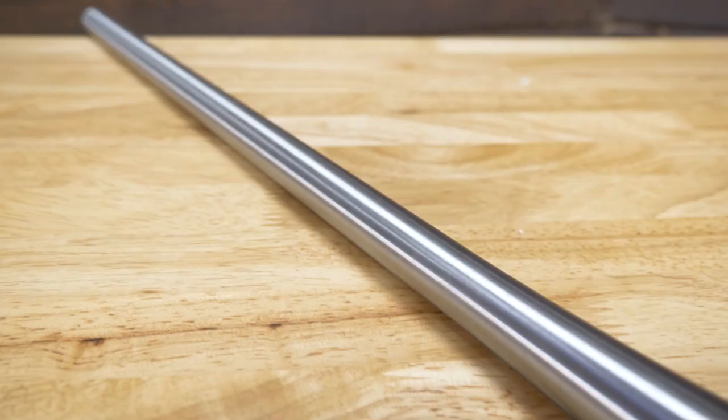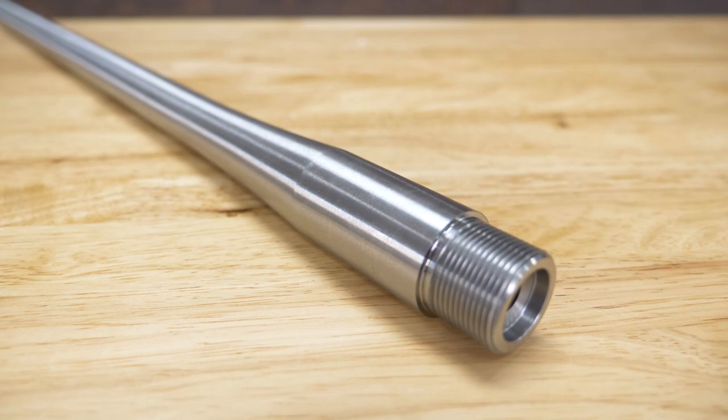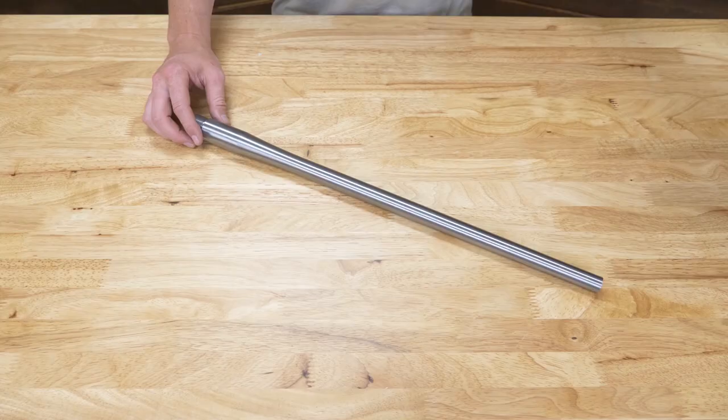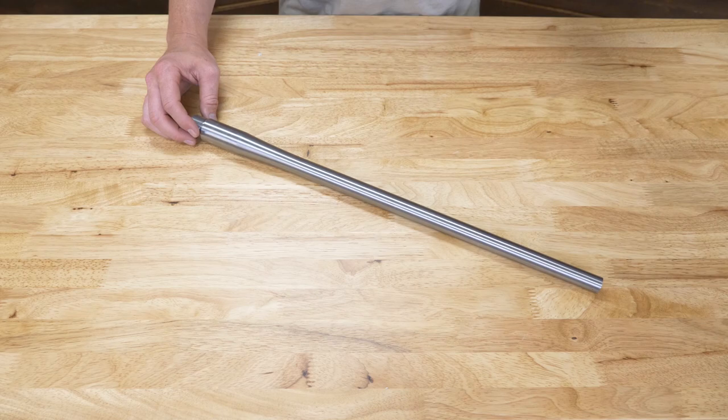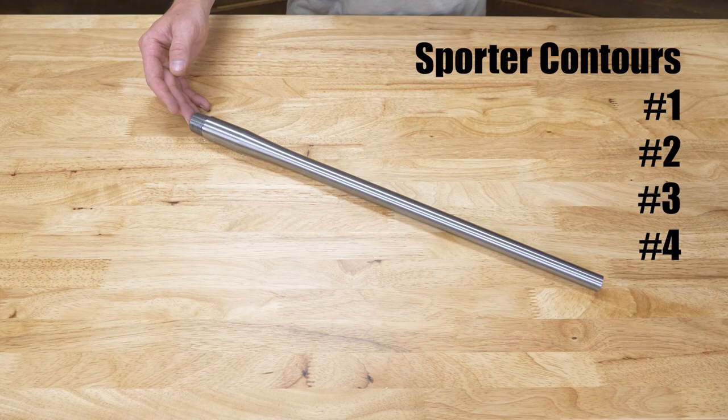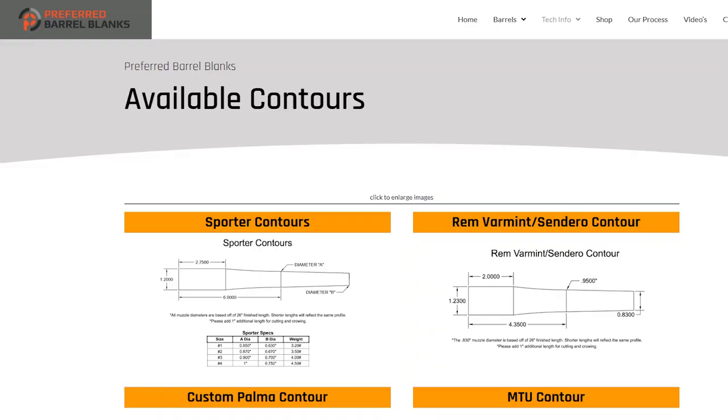Sporter contours have a radius that starts from 2 ¾ from the breech and creates a smooth transition to each taper diameter. Sporters vary greatly in weight, and I need to note that the numbers do not reference the barrel weight. Options include the number 1, the number 2, 3, and 4 sporter contours.